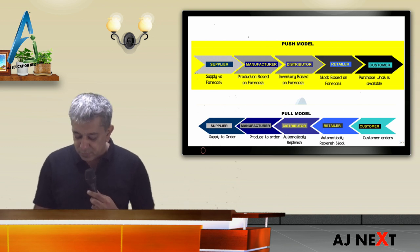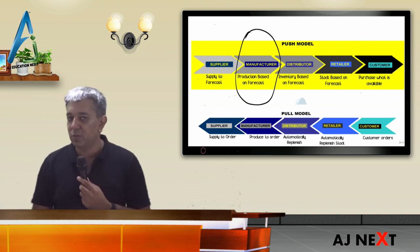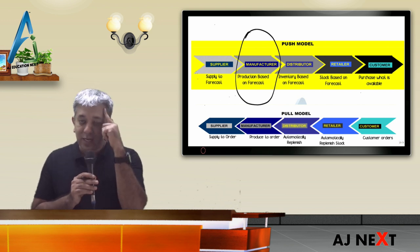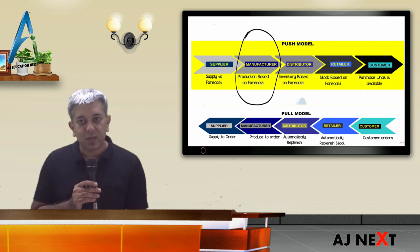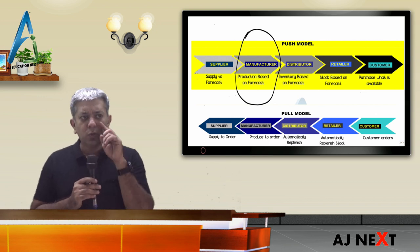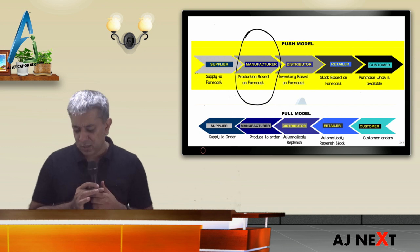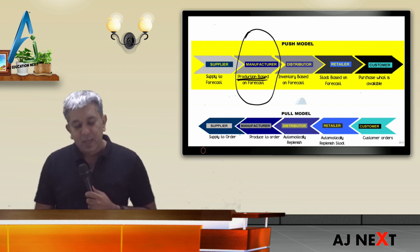Push system works like this: this is your manufacturer. The entire chain starts from the manufacturer under push system. He has to make goods, how much should he make? If he makes too much, stock will increase. Working capital requirements will increase, interest will increase.